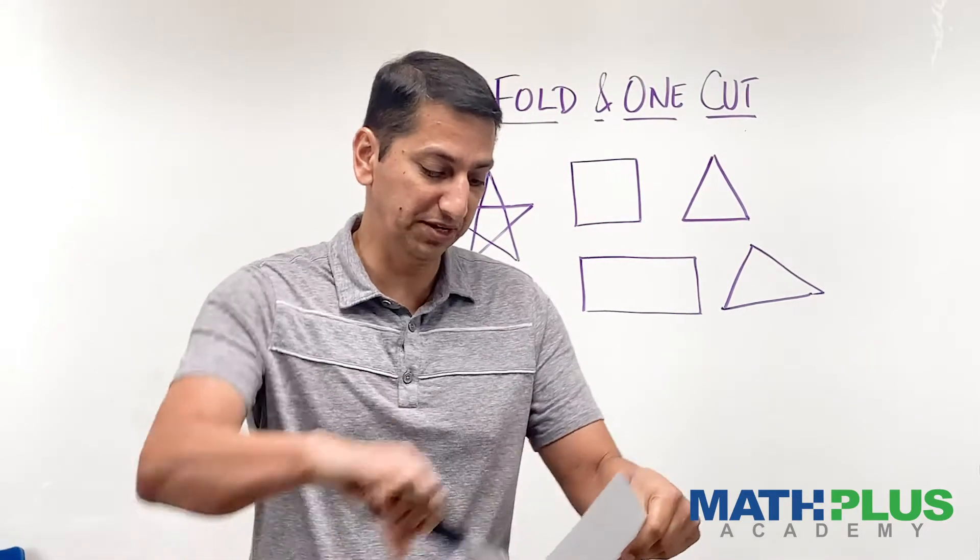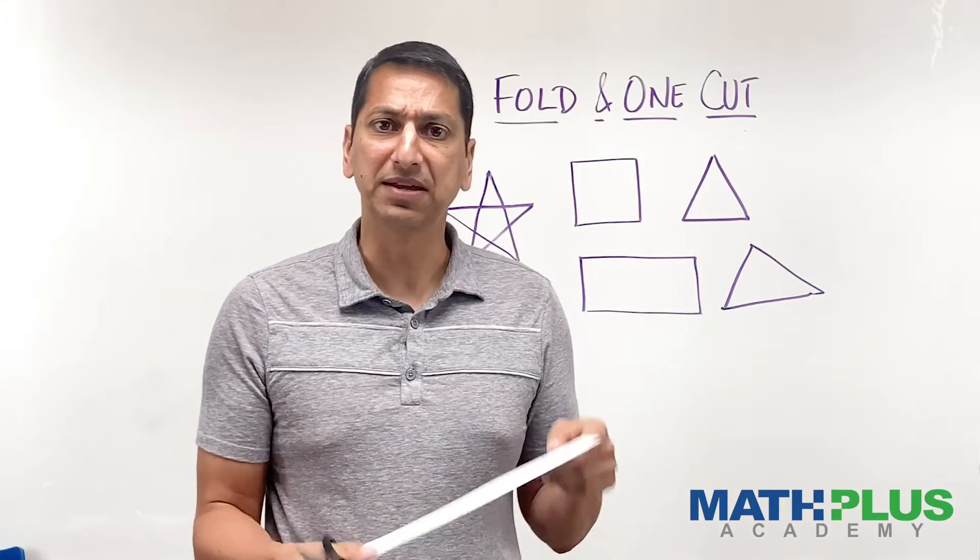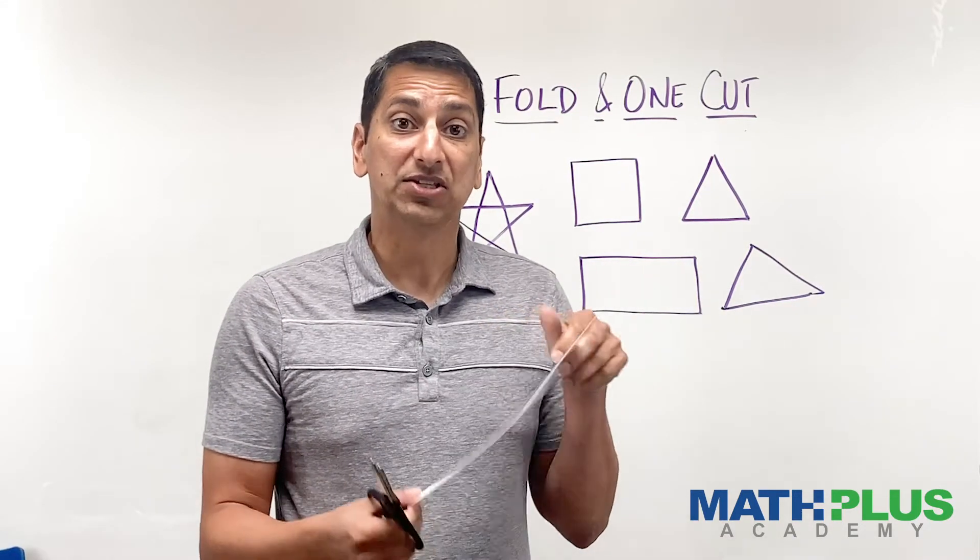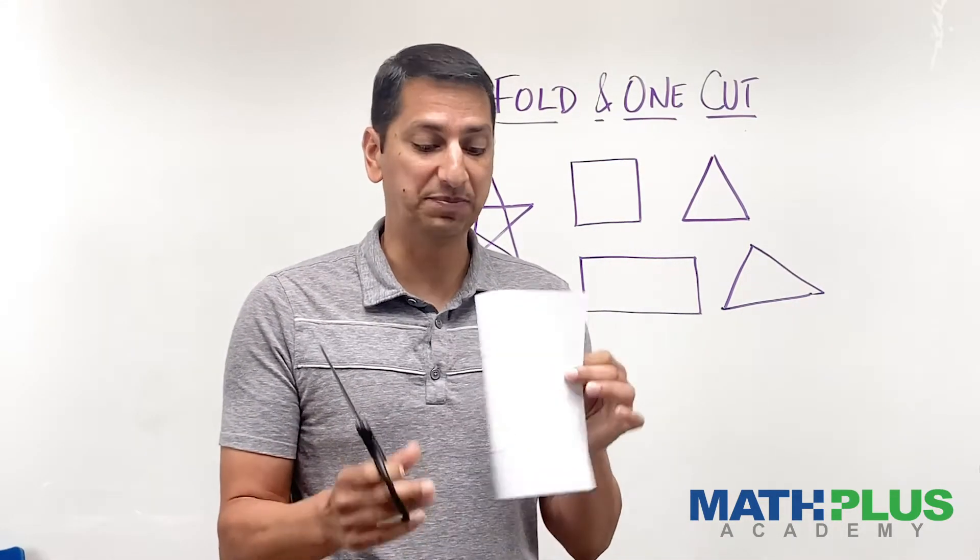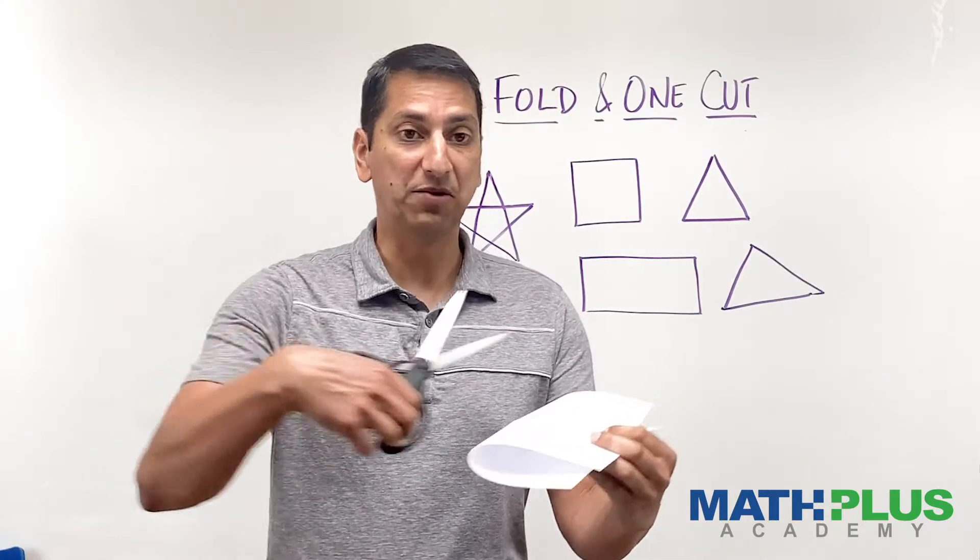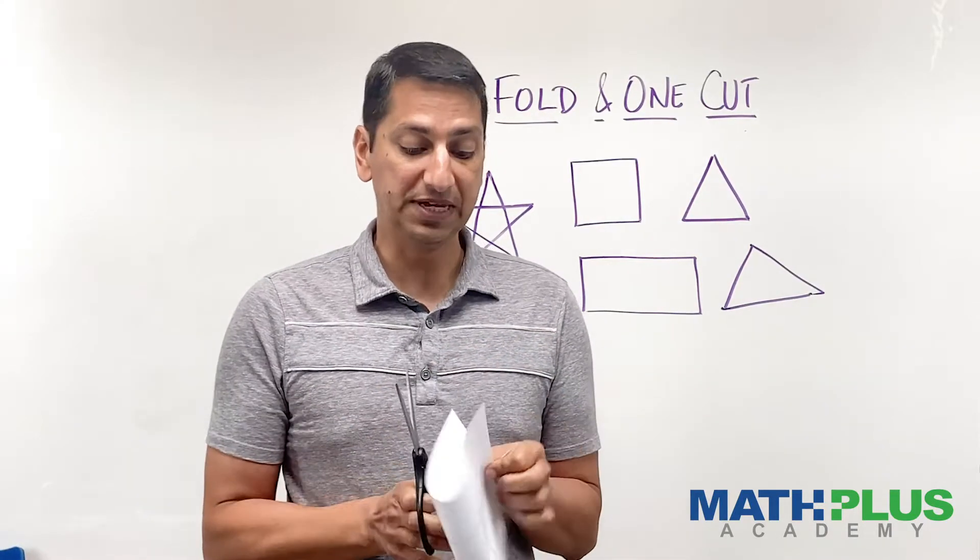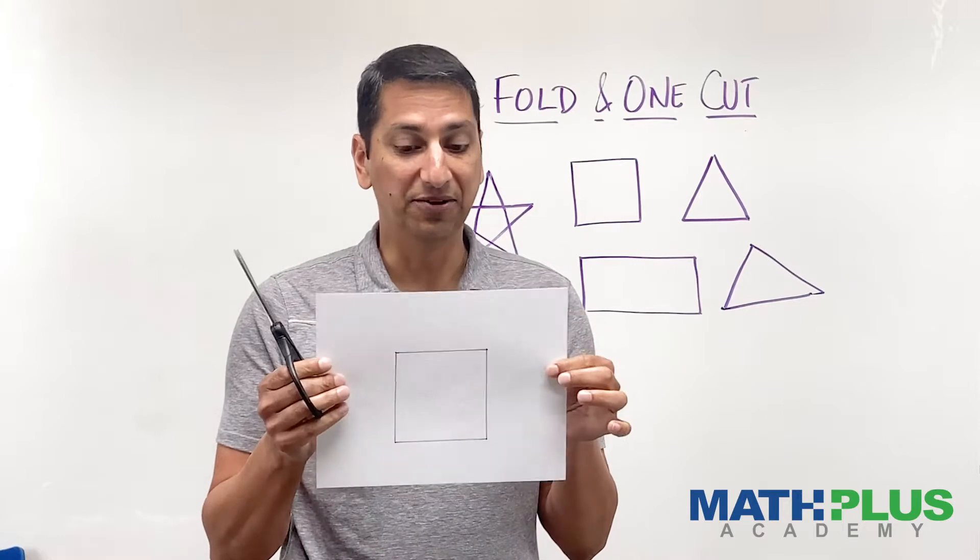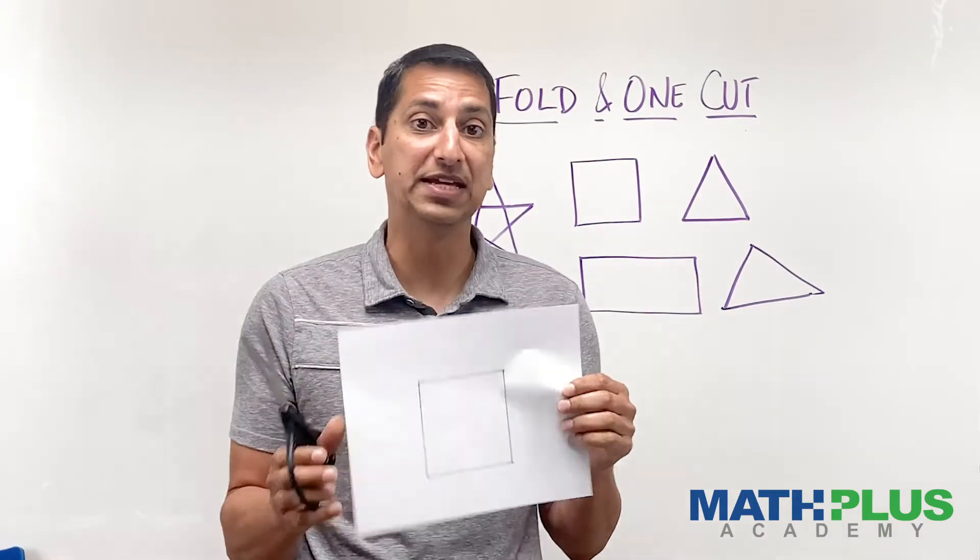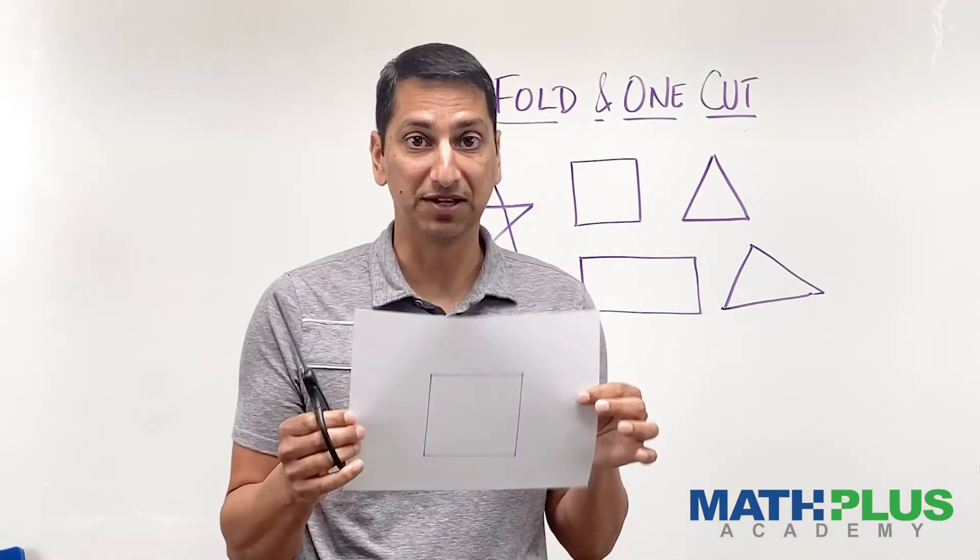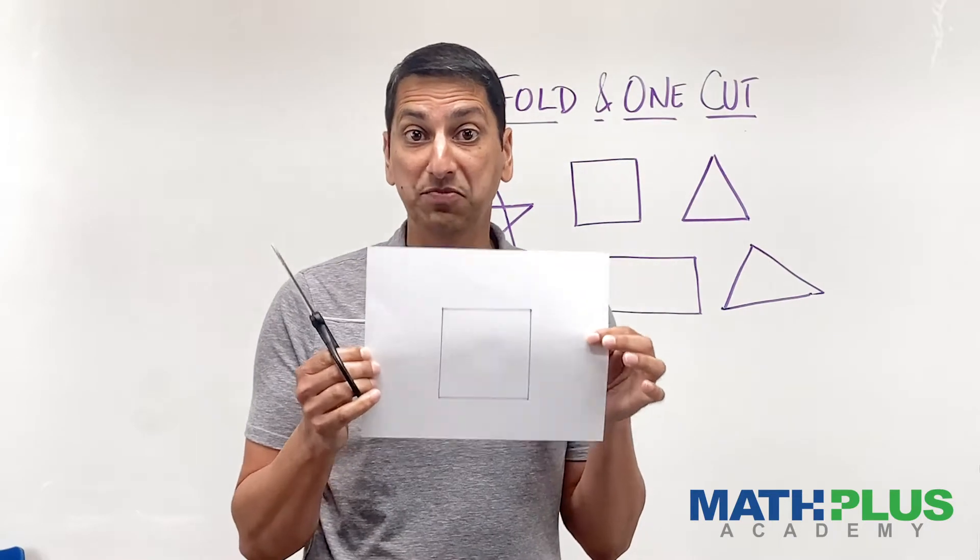So another thing I could do is punch a hole in the middle and work my way around. Again, kind of tedious. So what we're going to try and do today is fold this paper in some way and then make one straight cut and see if we can get this square out of this piece of paper without any extraneous slices anywhere else. So let me show you how you might do that.